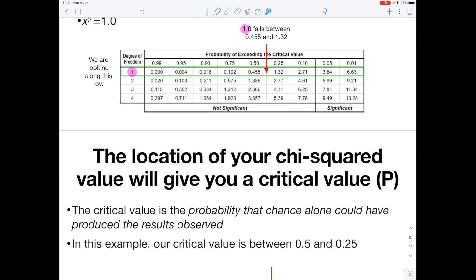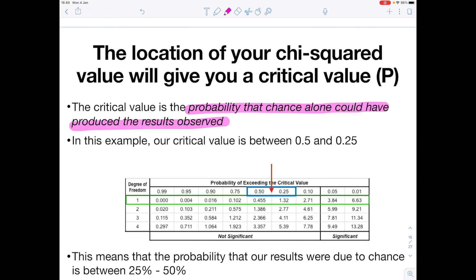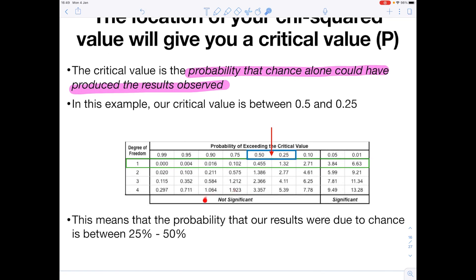So the location of your chi-squared value will give you a critical value known as P. The critical value is the probability that chance alone could have produced the results observed. So in this example, our critical value, being 1, fell between these two columns here, as 1 sits between 0.455 and 1.32. And effectively, because we know that it's not significant, all we're saying is that that calculated chi-squared means that the probability that our results were due to chance was between 25% and 50%.